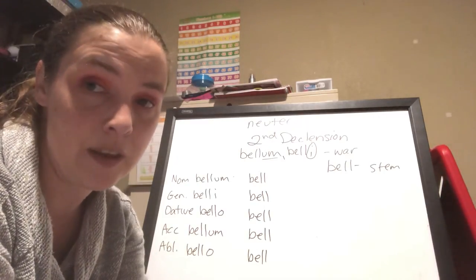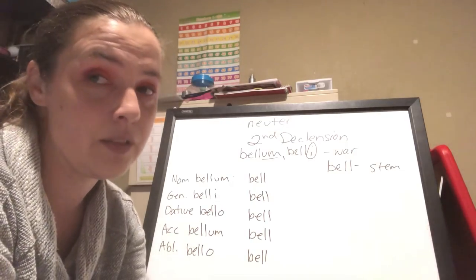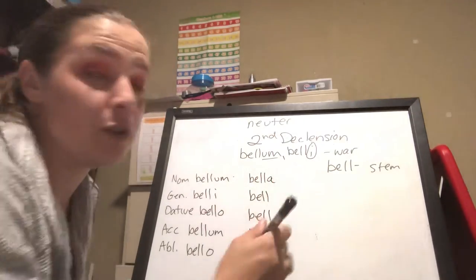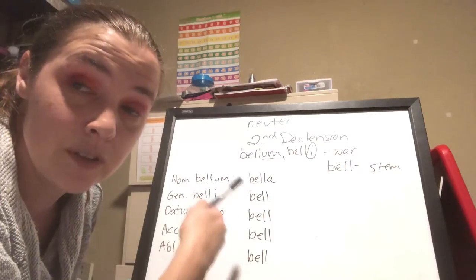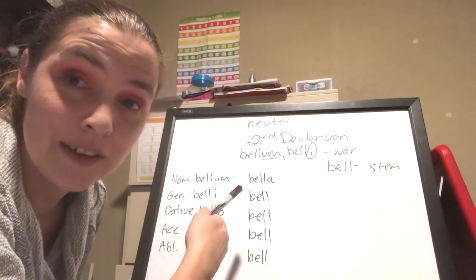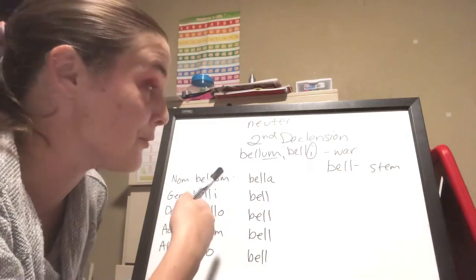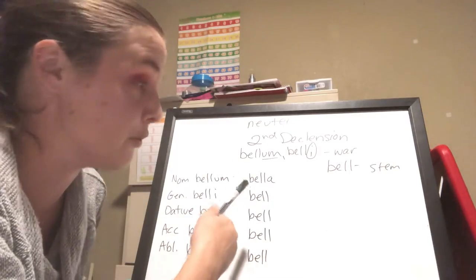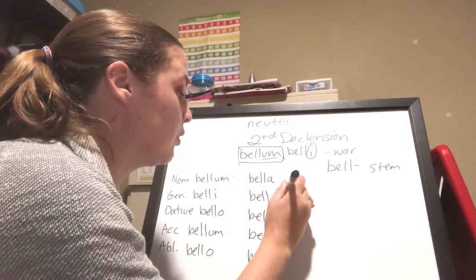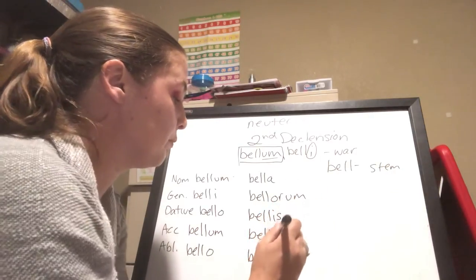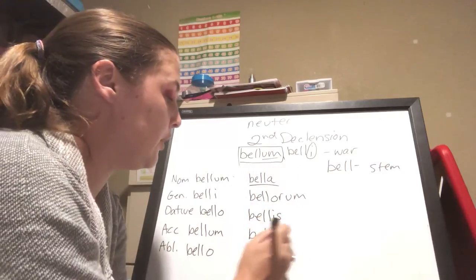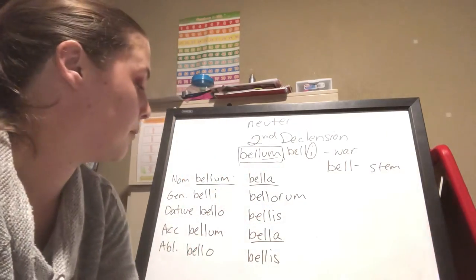Your nominative and accusative in the plural are going to end in -A. Here is your neuter rule: in neuters, your nominatives and accusatives are always the same, and in the plural they always end in -A. Always. There aren't a whole lot of hard fast rules in Latin, but that's one of them. So: bella, bellorum, bellis, bella, bellis. Three forms in the neuter second declension are different; the rest are predictable.